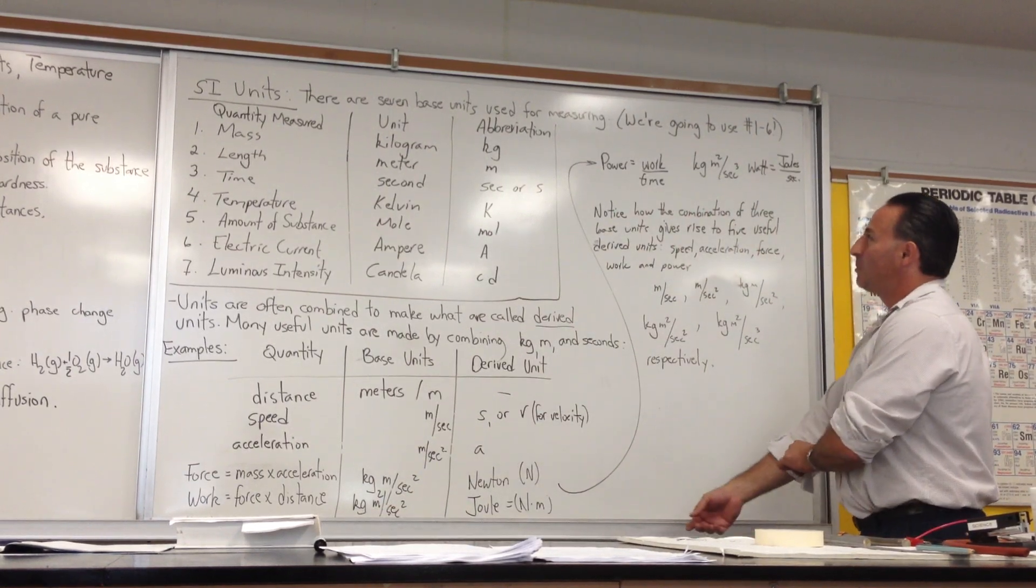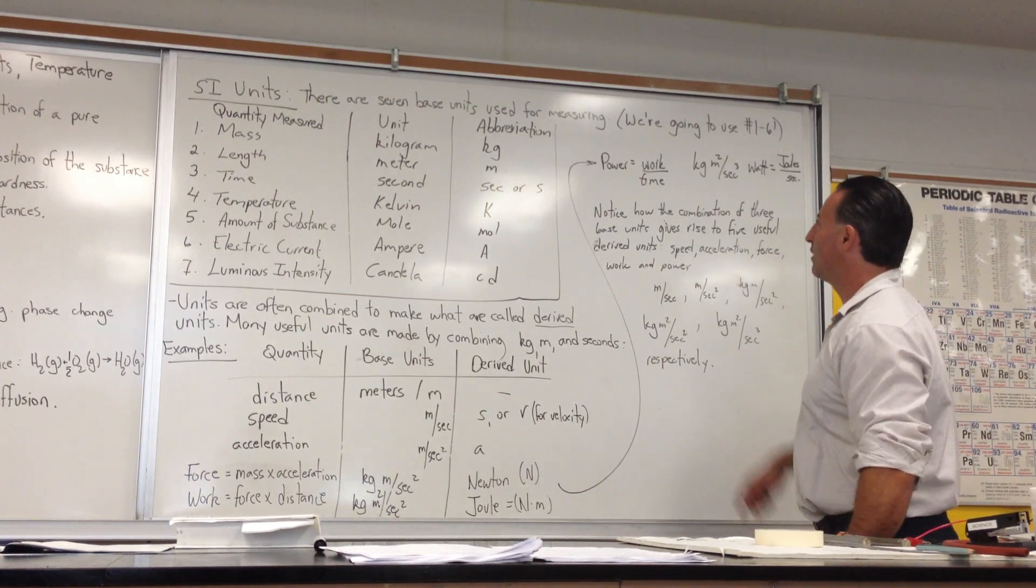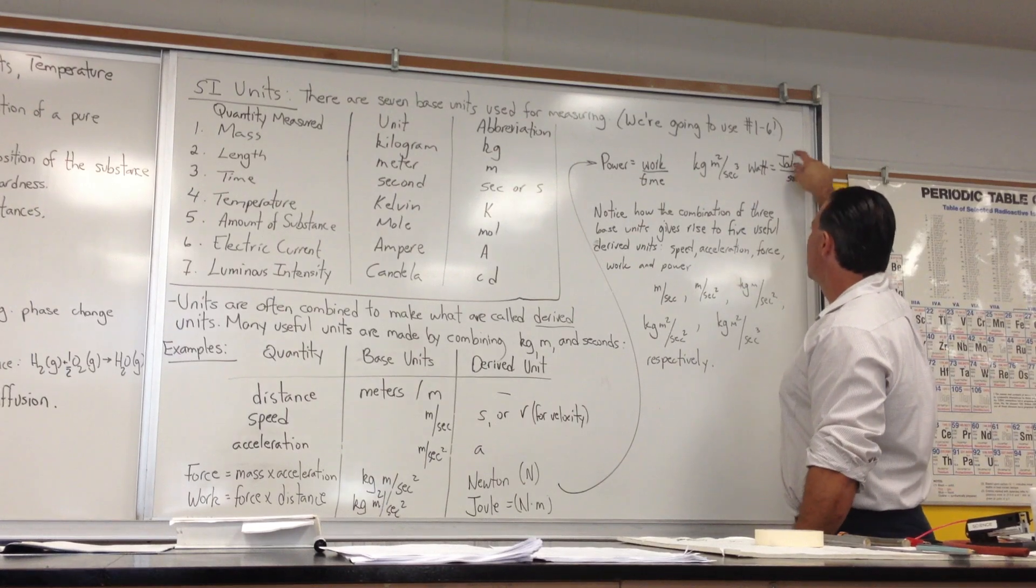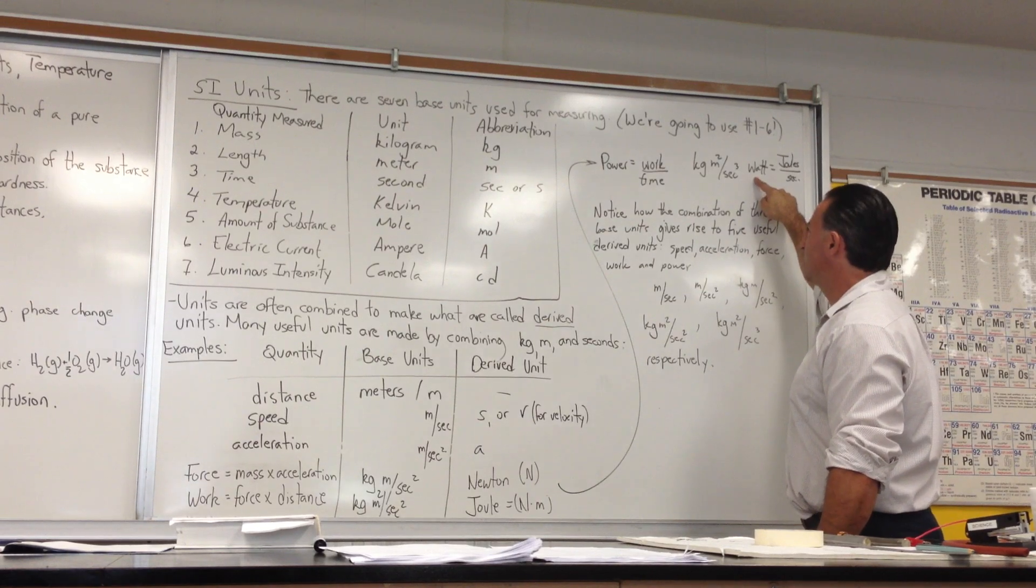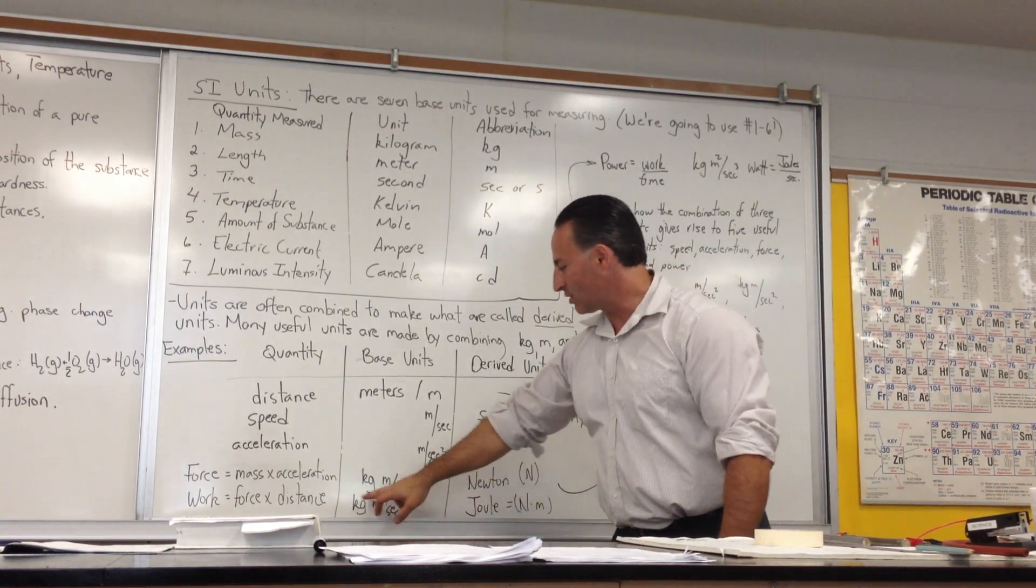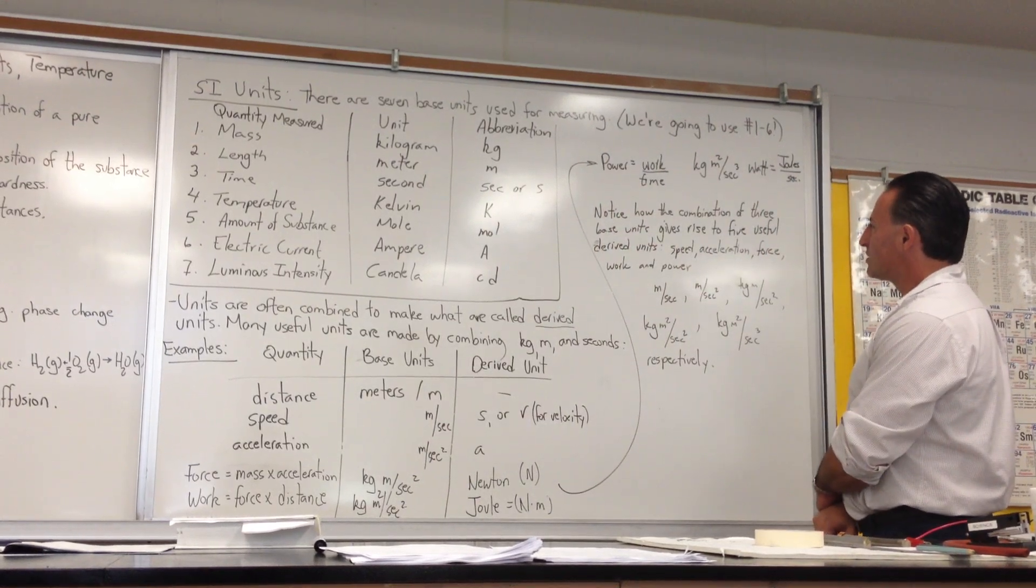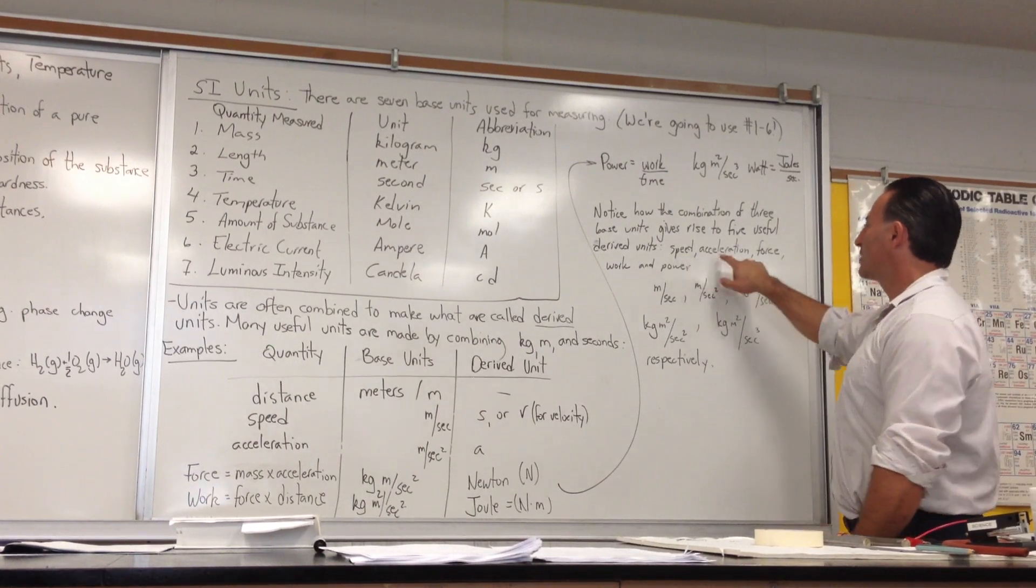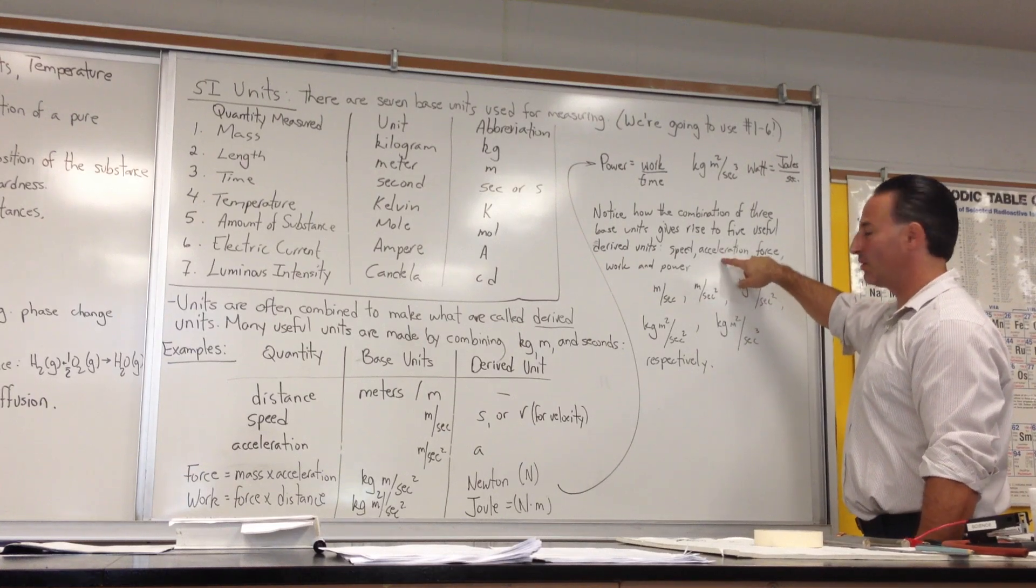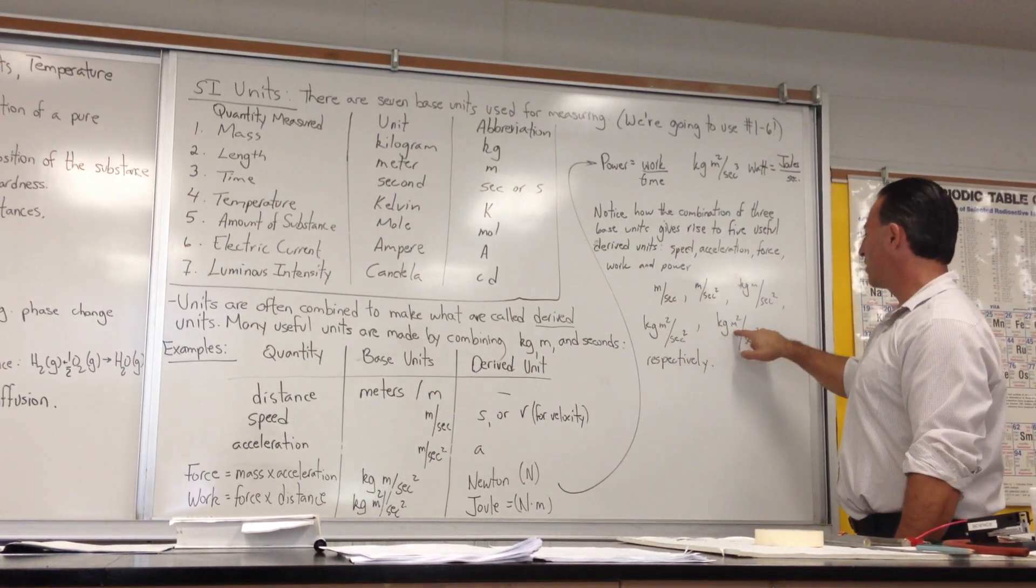And the next level of complexity is power. If I do a certain amount of work in a certain amount of time, I've developed power. I can have more power if I do the same amount of work in a shorter time. Because work is measured in joules and time is measured in seconds, then the units of joules per second has a name, it's called the watt. And that's a measure of power. The base units for the watt are kilogram meters squared per second cubed. Because work is kilogram meters squared per second squared. If I divide that by seconds, now the seconds becomes seconds cubed. Notice how the combination of three base units gives rise to five useful derived units: speed, acceleration, force, work, and power have, respectively, meters per second for speed, meters per second squared for acceleration, kilogram meters per second squared for force, kilogram meters squared per second squared for work, and kilogram meters squared per second cubed for power. That makes it a lot easier to memorize if you put it in a line like that.